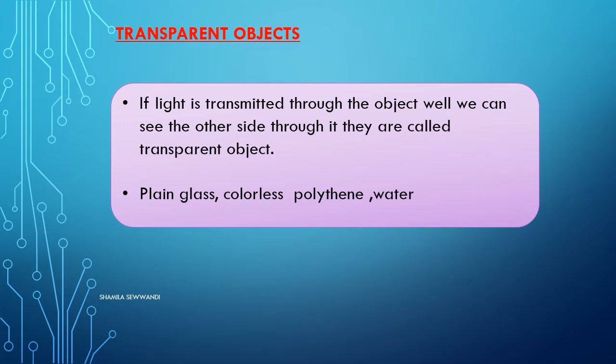Examples of transparent objects: plain glass window, colorless polythene, water, and gel.